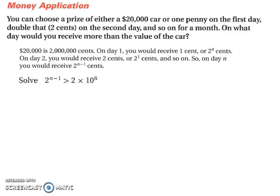So let's try a money application. You can choose a prize of either a $20,000 car or one penny on the first day, double that, so 2 cents on the second day, and so on and so forth for a month. On what day would you receive more than the value of the car?